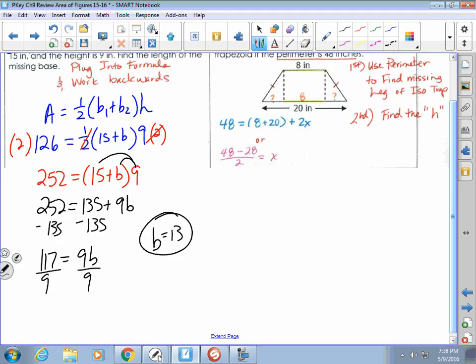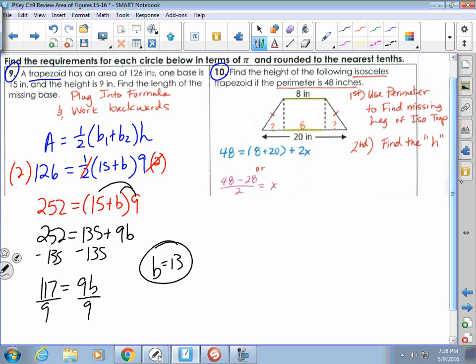You are going to be expected to work backwards, and I believe the shape is the trapezoid. So here I gave you a hint. Use perimeter to find the missing leg of the isosceles trapezoid. Isosceles trapezoid means the legs are congruent. Since I know the perimeter is your distance around 48 minus 28, that's our sum of our bases, divided by 2 would give me my two legs. So basically that would give me 10.